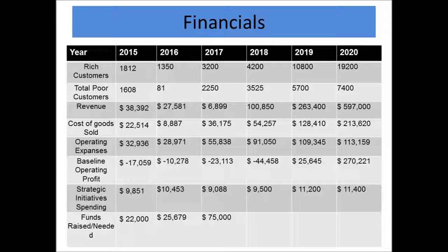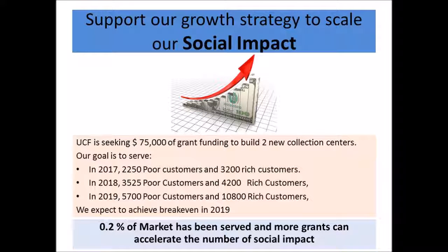Our financials: in 2015 we served 1,812 paying customers and 1,608 poor customers; in 2016, 1,350 paying customers and 81 poor customers, as we focused on sustainability. In 2017 we plan to serve 3,200 paying customers and more than 2,000 poor customers. UCF is seeking $75,000 in grant funding to build two new collection centers. Our targets: 2018 — 3,525 poor and 4,200 rich customers; 2019 — 5,700 poor and 10,800 rich customers. We expect to reach breakeven in 2019.